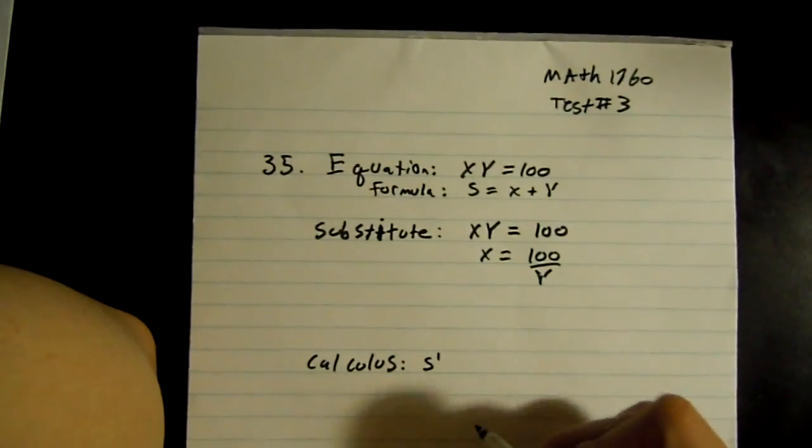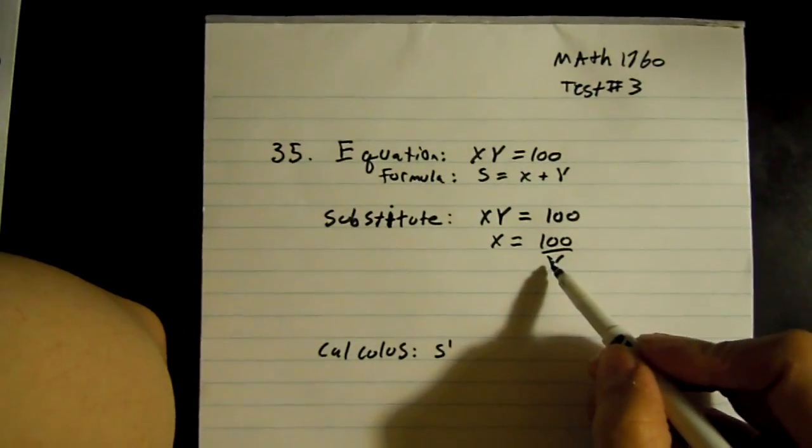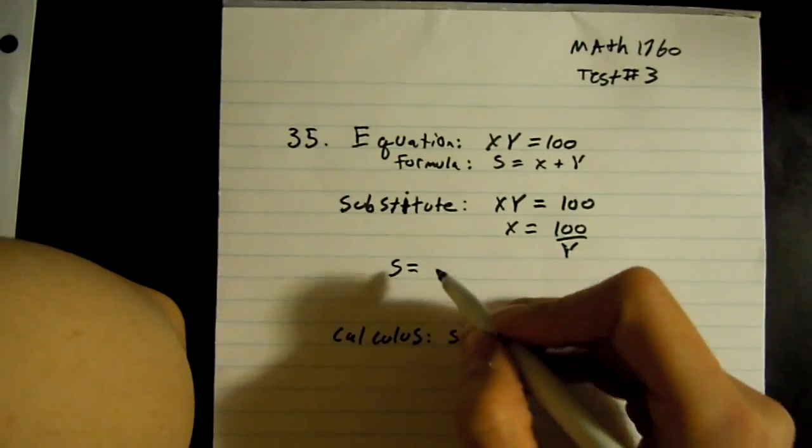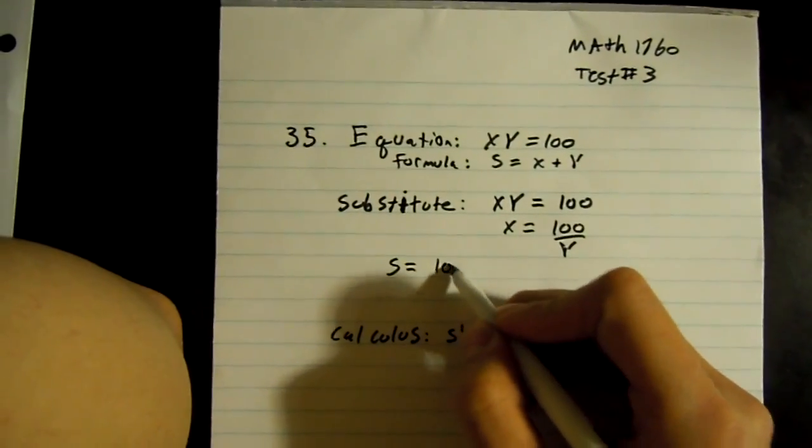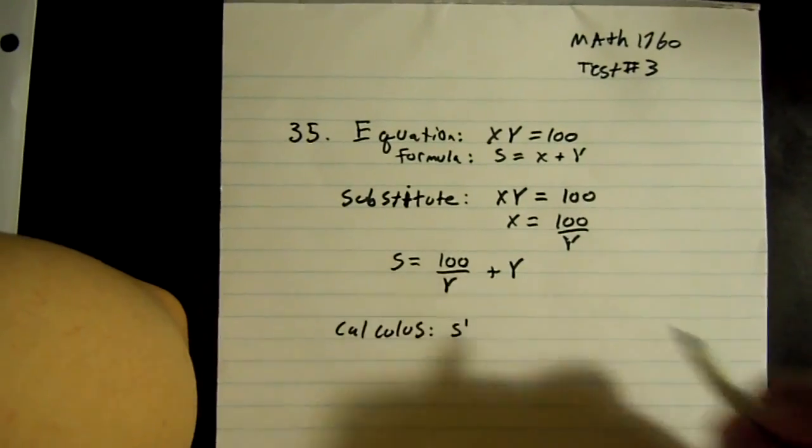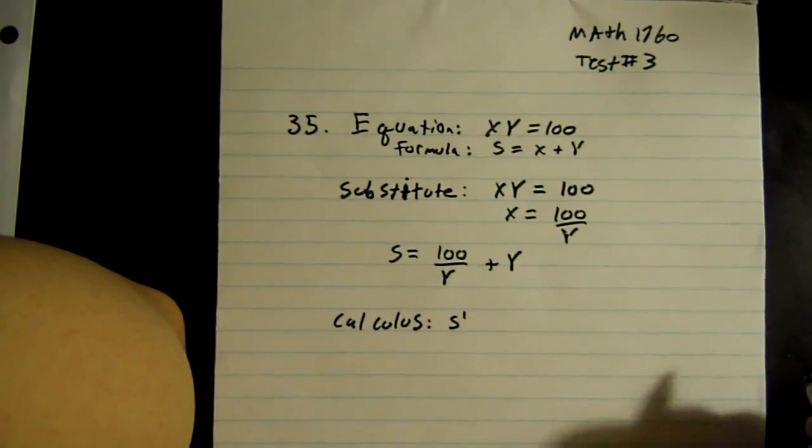Once you find x or y you can substitute the x into the formula. So the sum equals 100 divided by y plus y. Once you do that you can do the calculus.